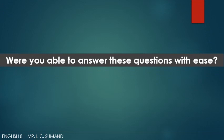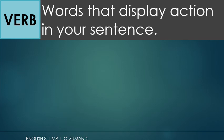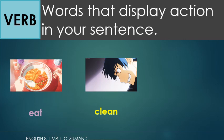Were you able to answer these questions with ease? We were able to give our responses because we are aware of the actions that we did, we do, and we will do. These words are called verbs. Verbs are words that display action in your sentences. Examples of these based from my responses are eat, clean, and buy.